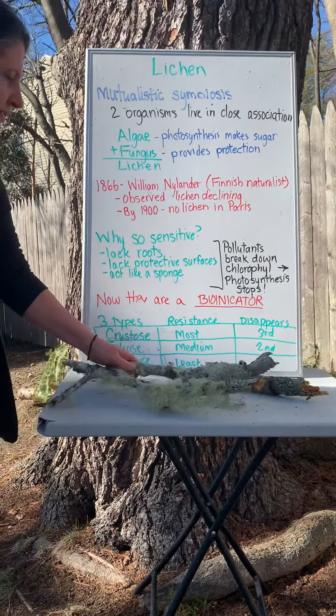This stick has all three types on it — it has crustose, foliose, and fruticose lichen on it.